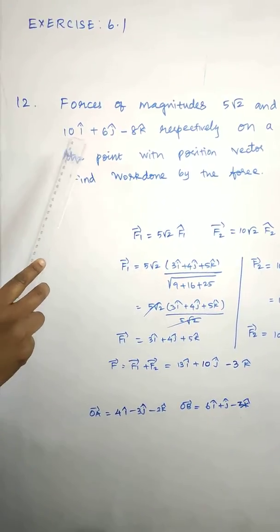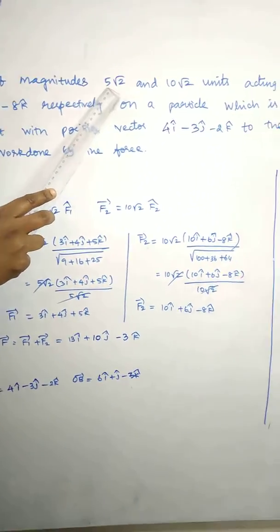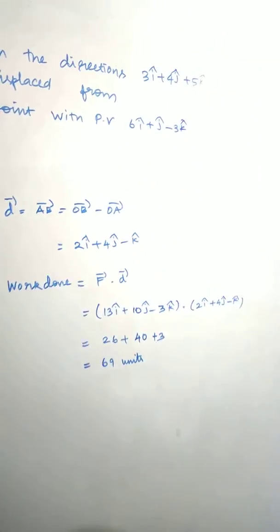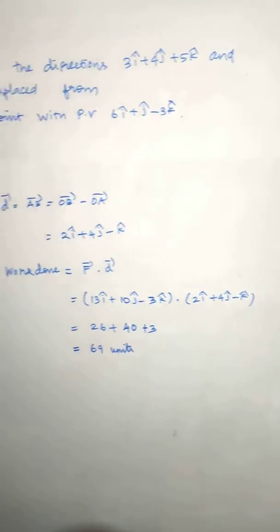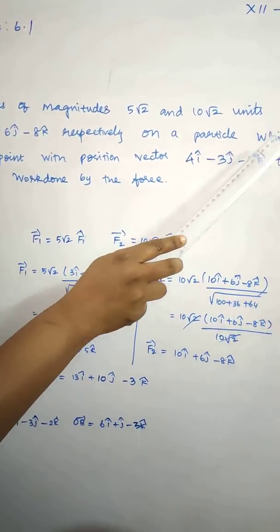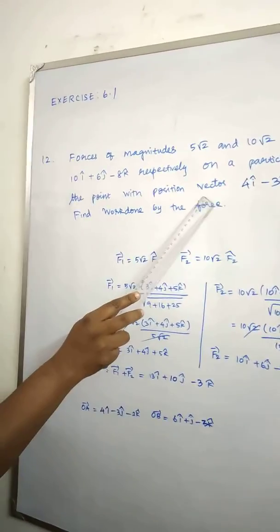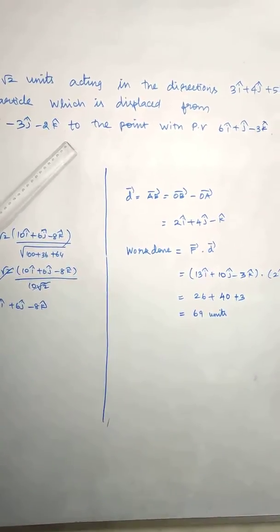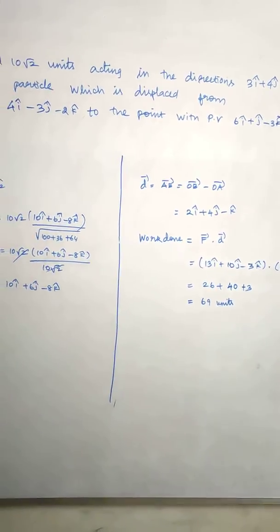Exercise 6.1, 12th sum. Forces of magnitude 5√2 and 10√2 units acting in the direction vectors acting on a particle which is displaced from the point with position vector 4i-3j-2k to the point with position vector 6i+j-3k.